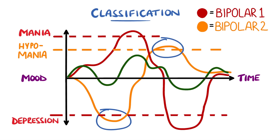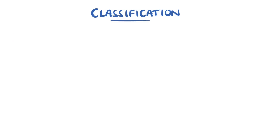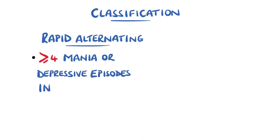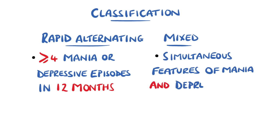Then there is cyclothymic disorder, sometimes considered mild bipolar disorder, where there are depressive and hypomania-like episodes that do not quite meet the criteria for major depressive or hypomanic episodes. Some people fluctuate quickly between the two extremes, with four or more episodes in one year defined as rapid cycling, while some can experience both depressive and manic symptoms at the same time.